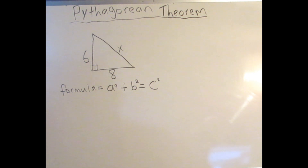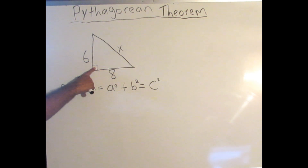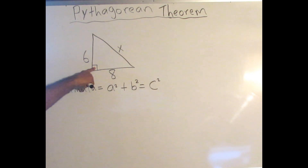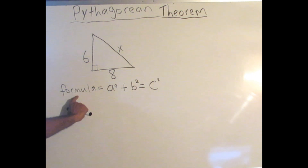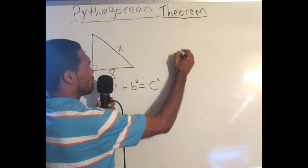Remember, you will not use this formula for every triangle. But as long as you can see this little square in the corner, you know it's a right triangle, and that is when you will use this formula. There are times when you'll just have to find a missing length and will not need to use this formula.